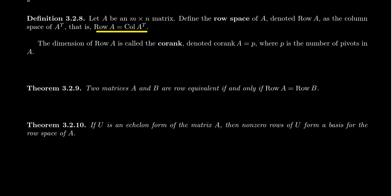The only way to use the same algorithm as for the column space is to keep track of all the row operations, which is something I'd rather avoid. Can we get a basis for the row space using the RREF? Yes, because it turns out that if two matrices A and B are row equivalent, then their row spaces will be identical. This makes sense because the row space is the span of the rows, and row equivalent matrices should have the same row span.